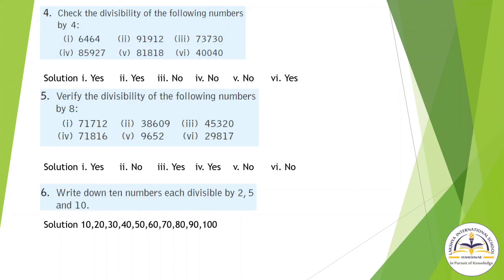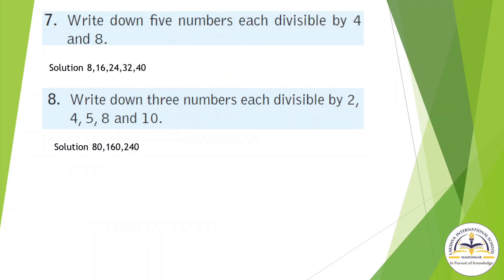For question number 5 (divisibility by 8), check the last 3 digits. The last 3 digits are 712, and 712 is divisible by 8, so yes. In the same manner, solve the other questions. Question number 6: write down 10 numbers each divisible by 2, 5, and 10. Question number 7: write down 5 numbers each divisible by 4 and 8. Question number 8: write down 3 numbers each divisible by 2, 4, 5, 8, and 10 — they are 80, 160, and 240.